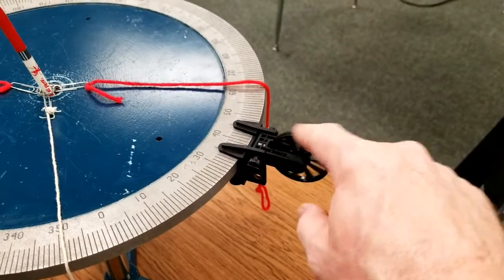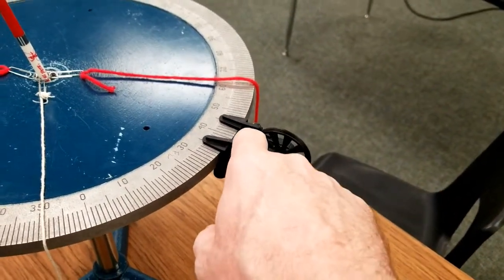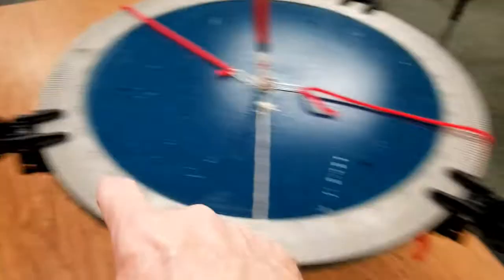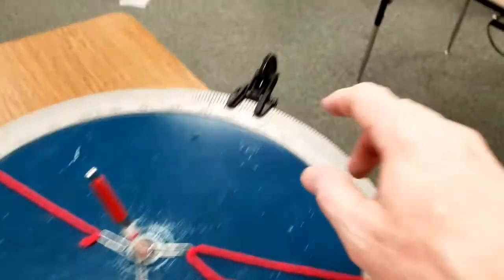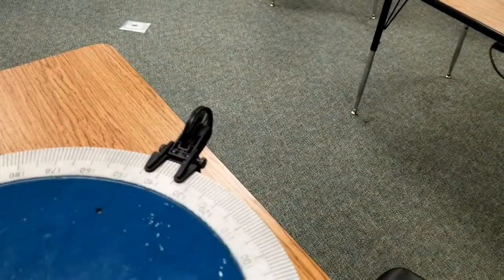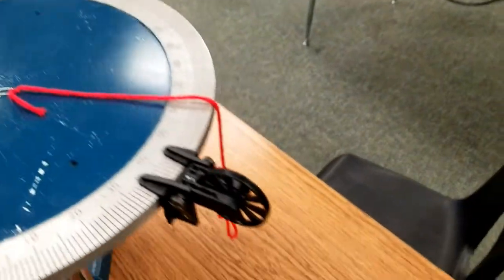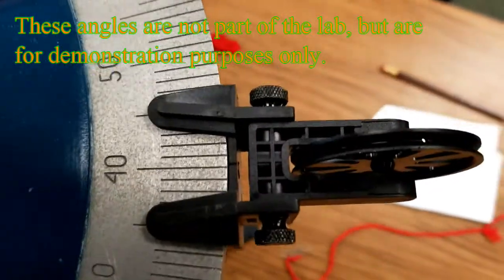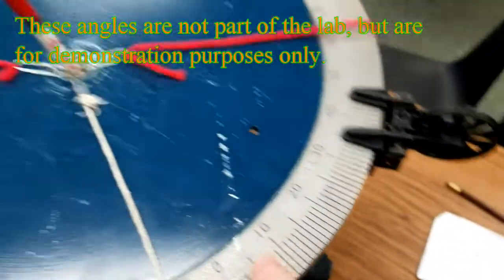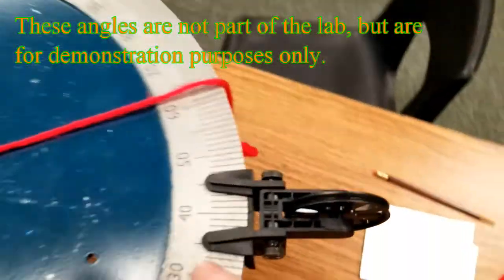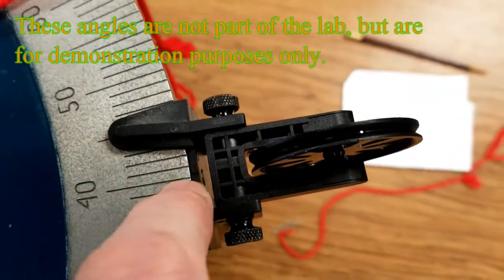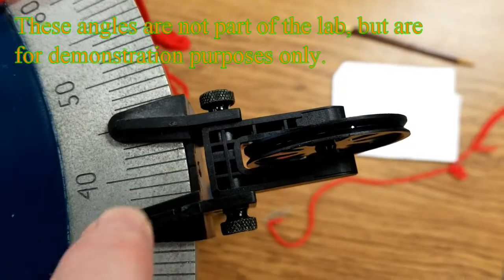We also want to make sure that the pulleys are moving freely. They're not rubbing against the edge right there, and they all seem to be moving nicely. One other thing is that the angle here, there are angles on the force table as is. The angle right here, there's a little notch right there in the middle of the pulley, and I'm hoping that you can see that well enough.